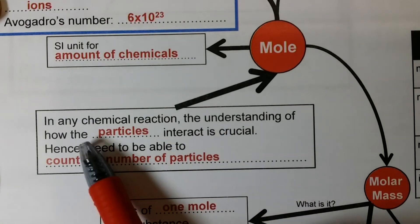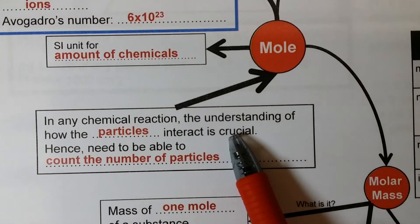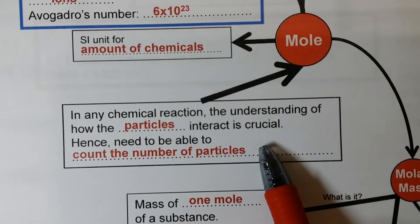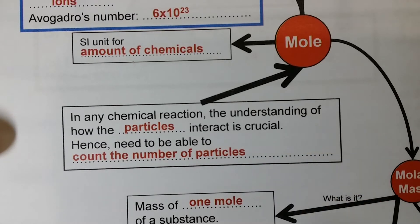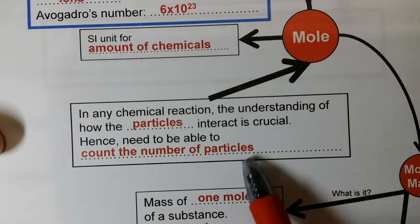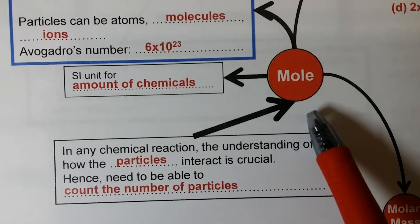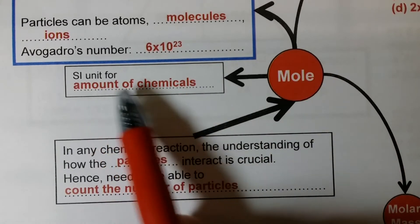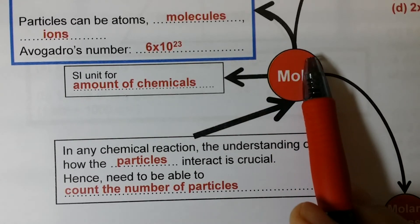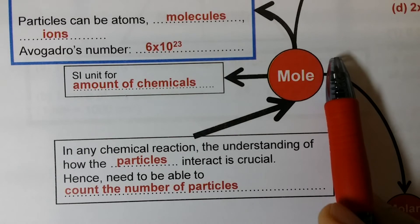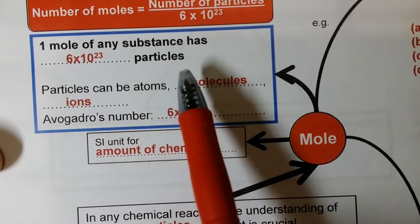In any chemical reaction, understanding how particles interact is crucial. Chemical A reacts with chemical B — to understand this, we have to understand how the particles in each chemical react. So counting particles is very important. There must be a unit for the number of particles, and that unit is the mole. Mole is the SI unit for the amount of chemicals — just like kilogram is the SI unit for mass. One mole of any substance contains 6 × 10²³ particles.